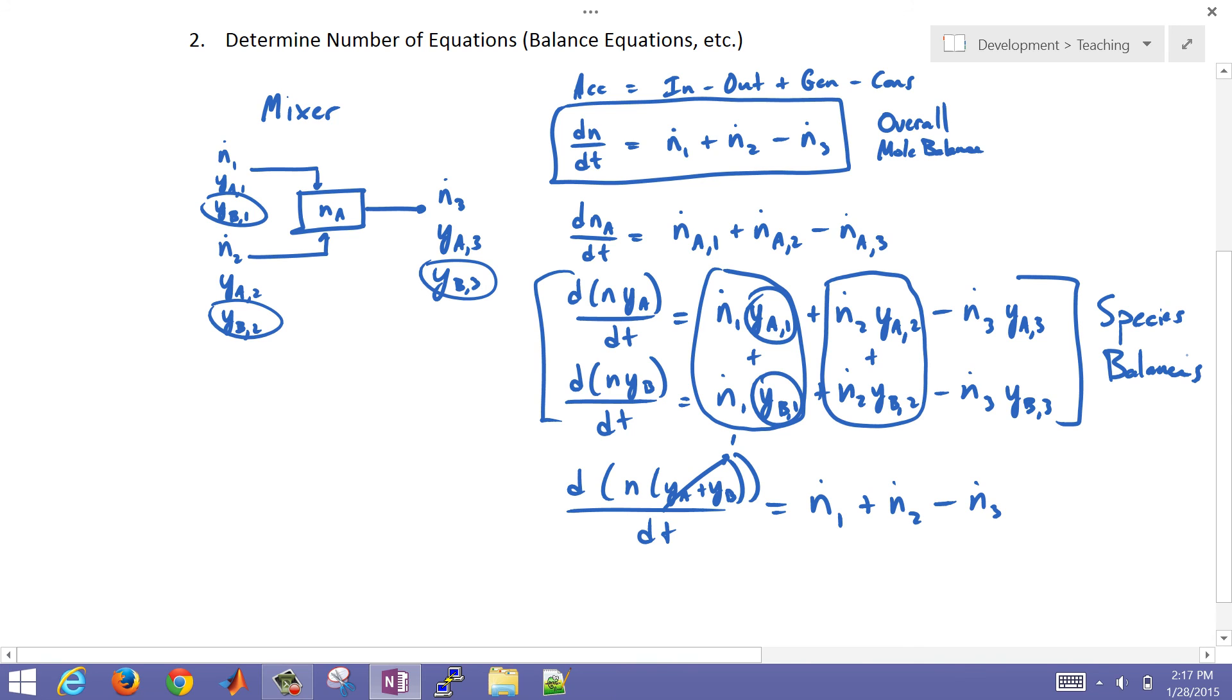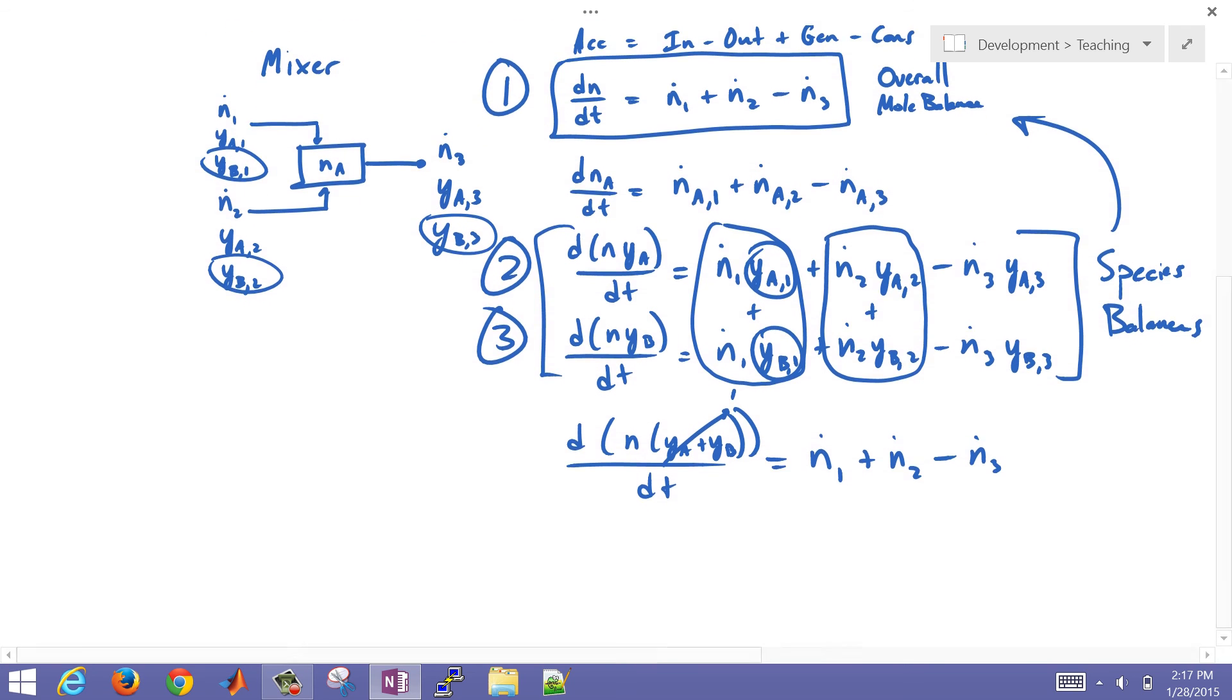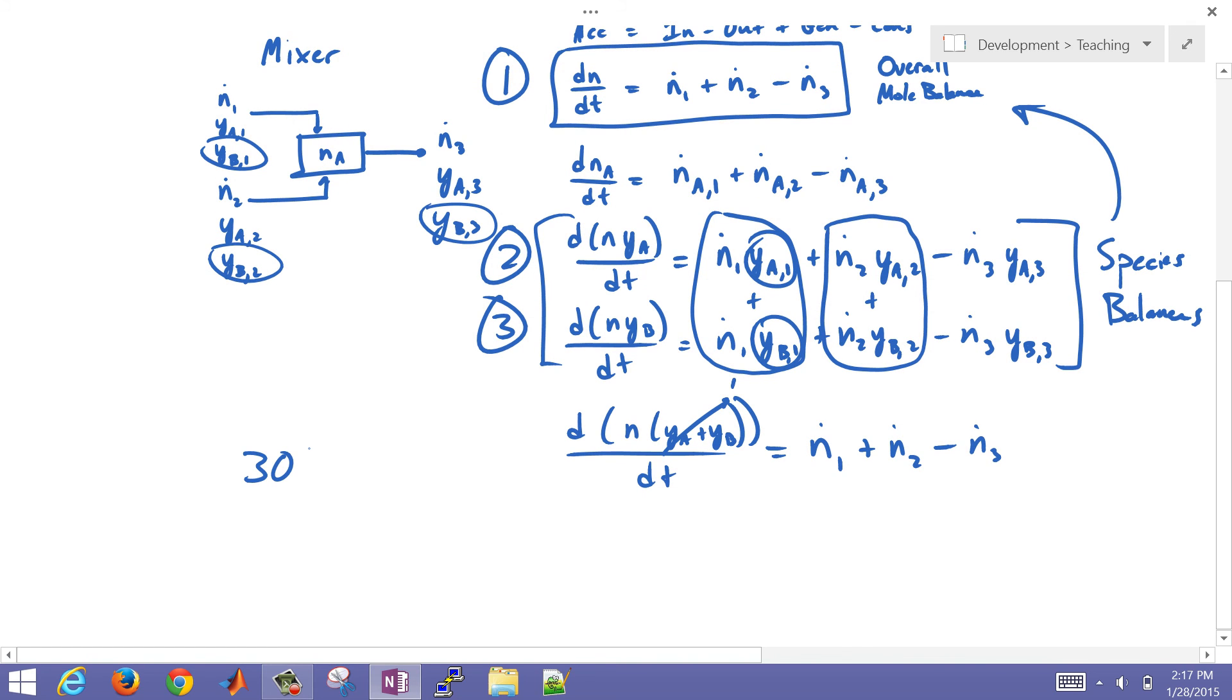And if I add those two together, then I get the overall mole balance. So this shows that those equations are not independent. Of these three equations, I can select any two of them. So I could select one and three, or two and three, or one and two. But I can't select all three. But what happens if you have multiple species, not just two species? Let's say I have 30 compounds, 30 species.